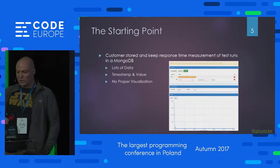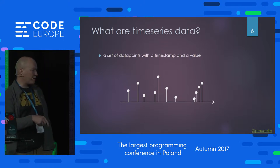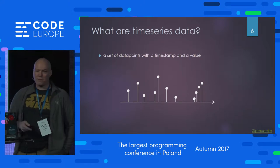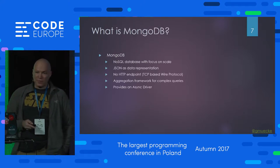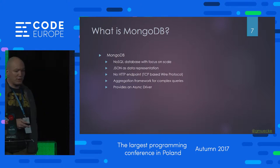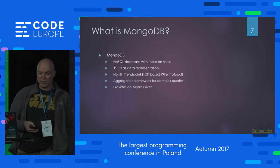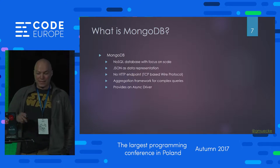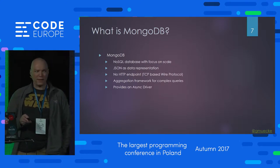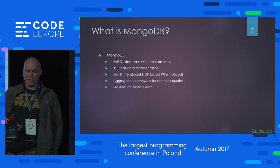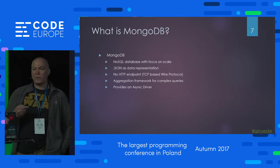Time series data is pretty simple: it's a set of data points with a timestamp and a value. You align them on the time axis and put values on the Y axis to display them. MongoDB, for those who haven't heard of it, is a NoSQL database with a focus on scale. It has JSON as its data representation, or BSON — binary JSON — for transmitting and storing data. It has no HTTP endpoint; it uses a TCP-based wire protocol. It has an aggregation framework for more complex queries, and it was one of the first databases to provide an asynchronous driver.